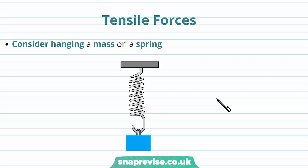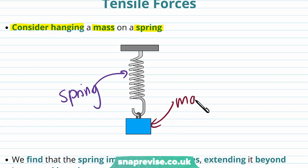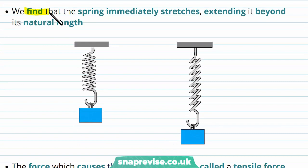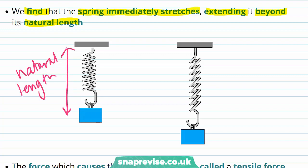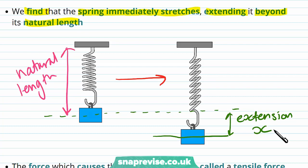Consider hanging a mass on a spring. We can see that the spring immediately stretches, extending it beyond its natural length. Before we apply the mass, this is the natural length of the spring, measured from the middle of the mass. Once we release the mass, the spring now has an extension X — by applying the mass, we've stretched it and it's gotten longer.